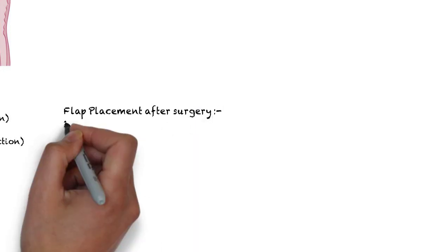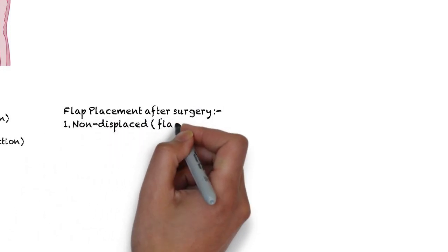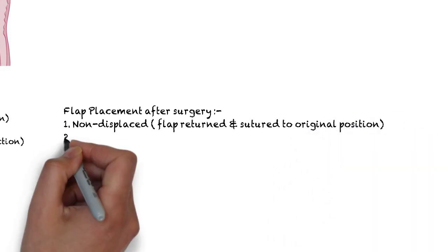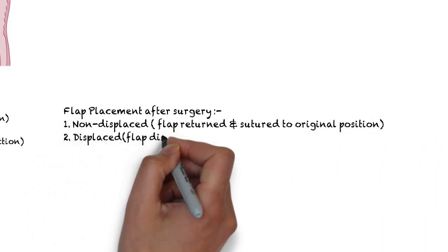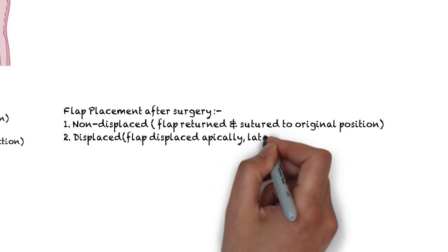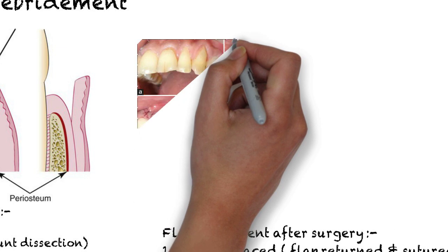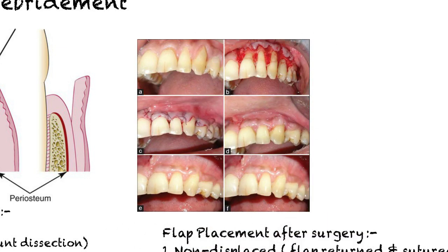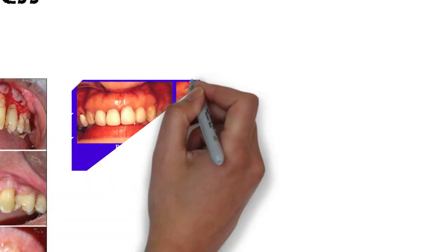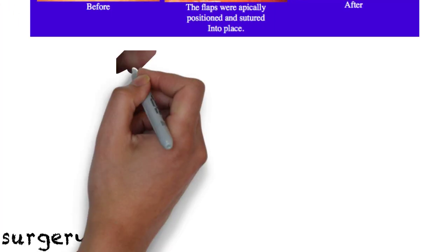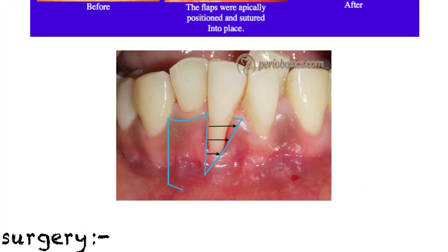Next is based on the flap placement after surgery. The first type is the non-displaced flap, here the flap is returned and sutured back to its original place. The second type is the displaced flap, where the flap is displaced either apically, laterally, or coronally. A few examples include the coronary advanced flap, usually done for root coverage; the apically positioned flap, usually done for crown lengthening or increasing the width of the attached gingiva; and the laterally displaced flap to cover defects lateral to the donor site.